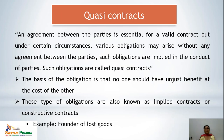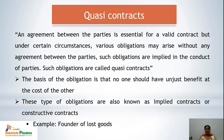Now we come to the last component of this lecture: quasi contracts. An agreement between the parties is essential for a valid contract, but under certain circumstances various obligations may arise without any agreement between the parties. Such obligations are implied in the conduct of parties and are called quasi contracts. The basis of this is that no one should have unjust benefit at the cost of another. These obligations are also known as implied or constructive contracts. The best example is the finder of lost goods — there was no contract between the parties, but such obligation is implied through the conduct of the parties.